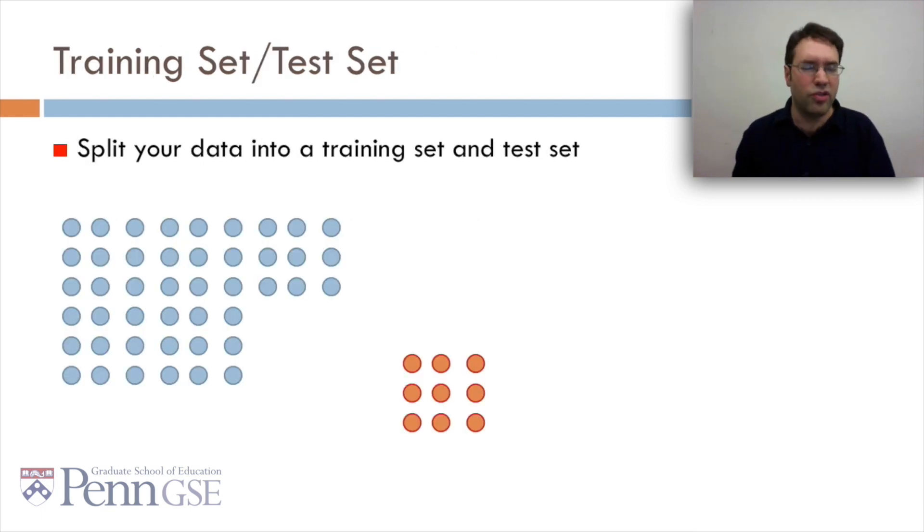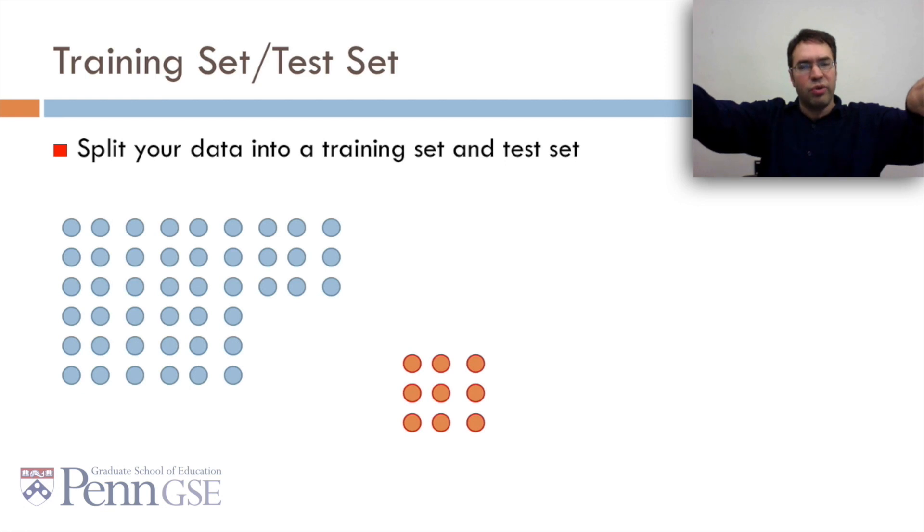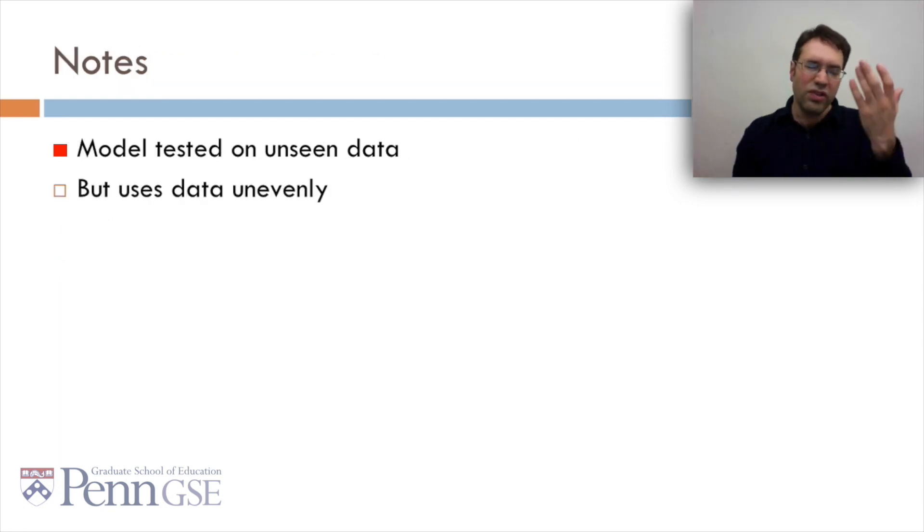So one way to look at generalizability is just to have a training set and a test set. You take your data and you split it into a training set and a test set, usually with the training set being a good bit bigger than the test set. This is good. Your model tests on unseen data. But it uses your data unevenly. Some data points are training points, and some data points are test points, and never the two shall meet.